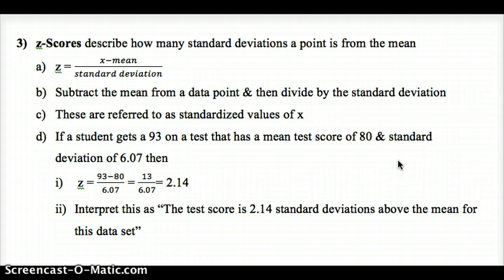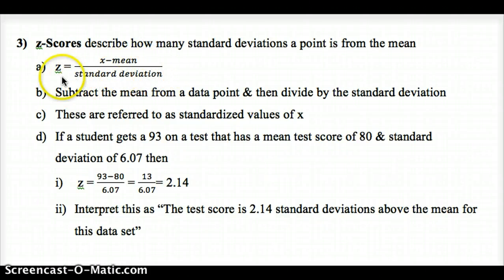Another way to describe our data is a z-score. Z-scores are going to be very important to this class — we're going to be looking at these a lot going forward. The z-score tells you how many standard deviations something is away from the mean. You subtract the mean from the data point x — that tells us the distance from the mean — and then divide by the standard deviation.